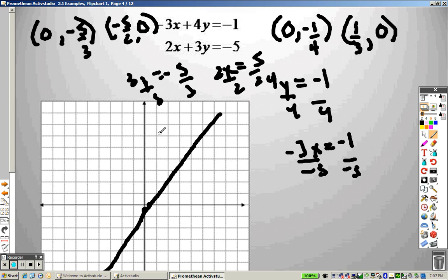So, negative 5 thirds, negative 5 thirds is like negative 1 and 2 thirds. What that means is I go over nothing and go down negative 1 and 2 thirds, which is about right there. This one is negative 5 over 2, which is 2.5, and 2.5 is roughly right there. So, I draw a line and connect those two points.